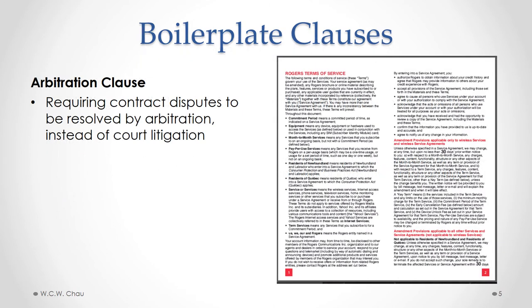Another common boilerplate clause is an arbitration clause. An arbitration clause requires disputes under the contract to be resolved by arbitration instead of court litigation. So instead of suing in court, the parties have to resolve their dispute by arbitration, which quite often could be cheaper or faster.